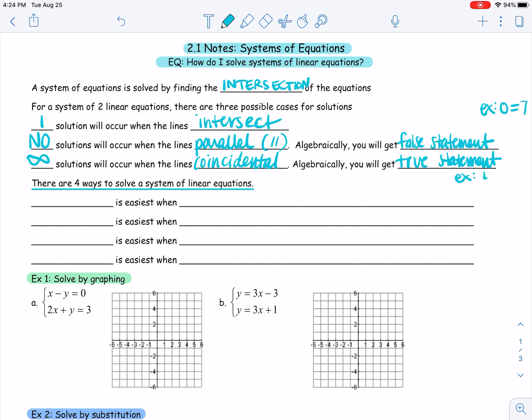Example might be 4 equals 4. That's my favorite number. So that's, like we said, for a system with two linear equations, there are three possible cases: one solution, no solutions, or infinite solutions.